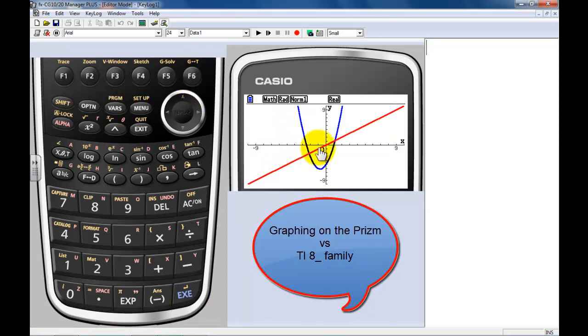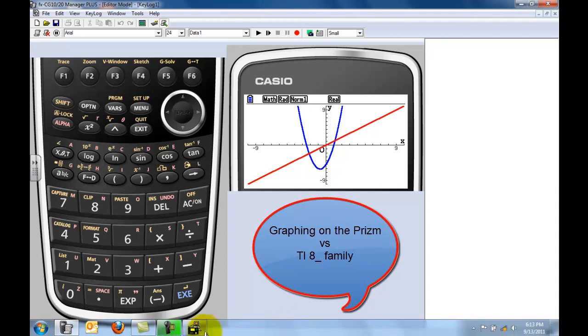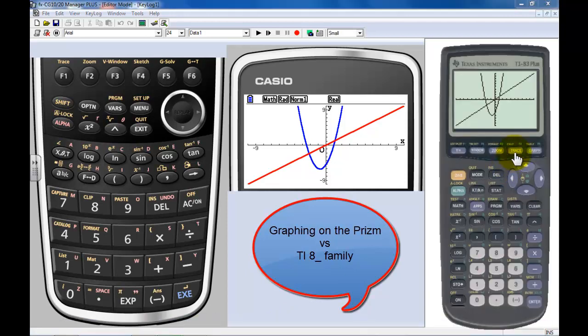Now, you notice the difference. Being a teacher, I love this. I see the difference in red and blue. Again, if I want to find the intersection. On TI, you went into second calc. You wanted to find the intersection. You had to tell the first one. You had to go down and tell it the second one. And then a couple of enter, enters, and things like that.